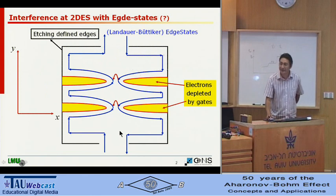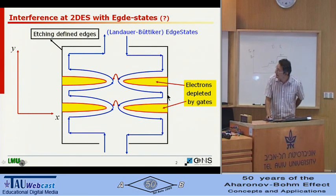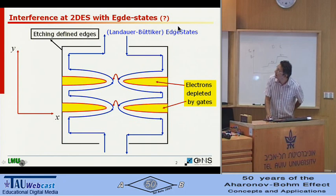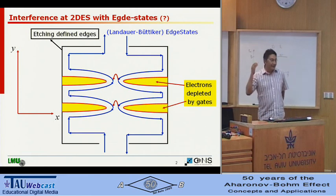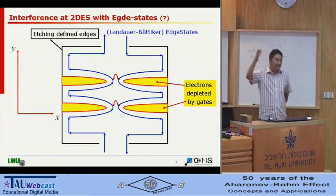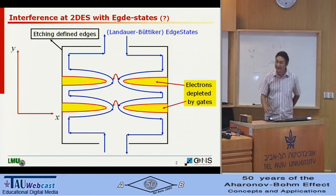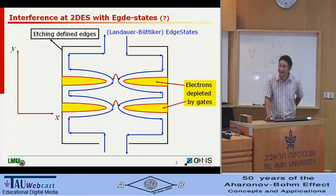You have seen such figures saying that these edge states, which are called Landauer-Büttiker type edge states, are going from one side to the other side, they are interfering, and then you can see this interference pattern. But till now it was always taken like God-given edge states. What are really these edge states? I spent like seven years and I still don't understand what they are.